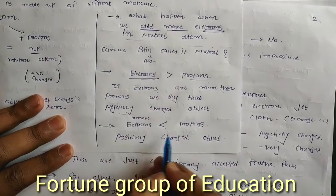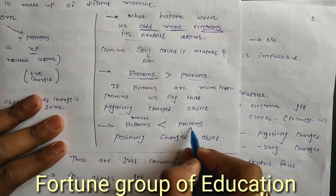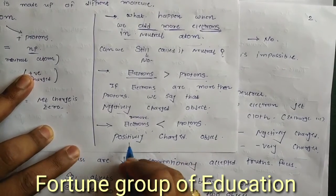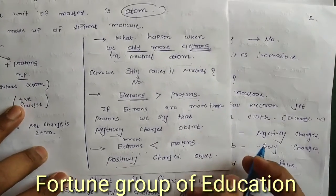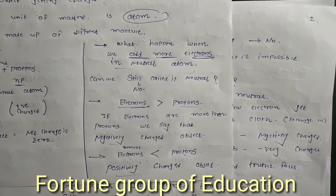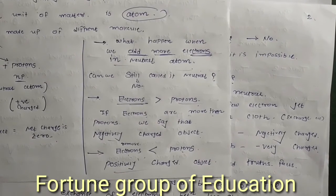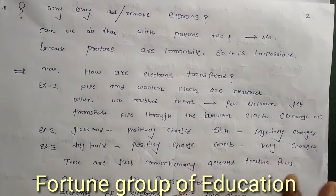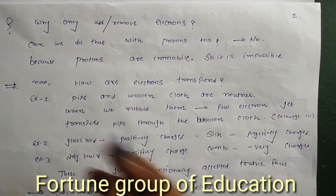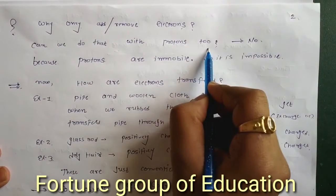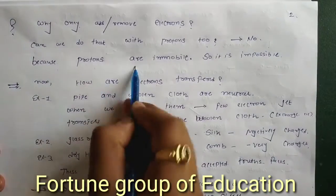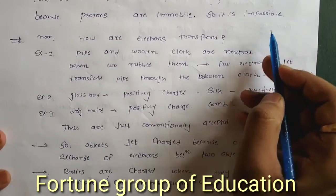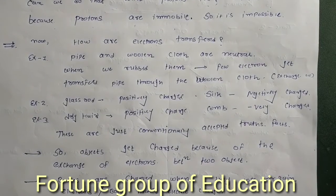Similarly, when we remove electrons from a neutral object, the number of protons becomes more than the number of electrons, so we get a positively charged object. Now, a question in your mind: why can we only add or remove electrons and not protons? The answer is that protons are immobile inside the nucleus, so it is impossible to add or remove them.